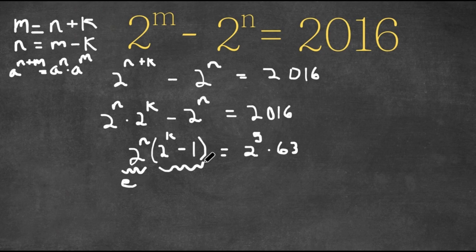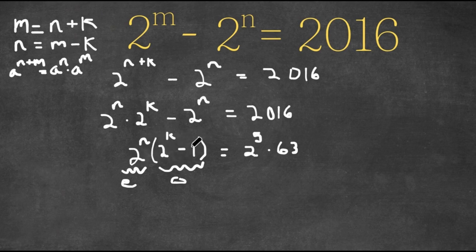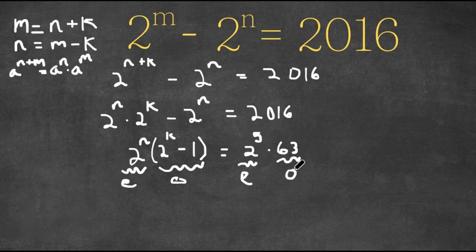This factor is going to be odd — I'm going to write an O for odd — because we subtract 1 from 2 to the power of k. This is 2 to the power of n, so any number you plug in would be even, since 2 is an even number. However, we're going to subtract 1, so this is actually going to be odd. And on the right side, 2 to the power of 5 is even, and 63 is odd. So now what I'm going to do is I'm going to set the evens equal to each other.